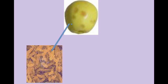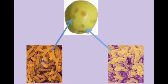Pseudomonas fluorescens and Erwinia carotovora are two specific bacteria known to cause soft rot. Pseudomonas fluorescens is notorious for being psychrotrophic, which means it can flourish in cold environments like refrigerators. Erwinia carotovora flourishes at room temperature. Together, the bacteria immediately begin the soft rot process.